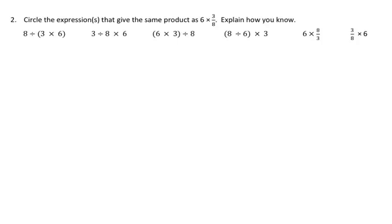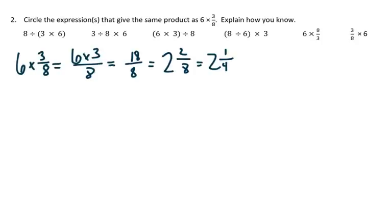We're going to start out with question number 2 from the homework. It says circle the expressions that give the same product as 6 times 3/8 and explain how we know. So I'm going to do 6 times 3/8, and I know I get a product of 2 and 1/4.